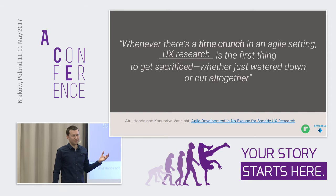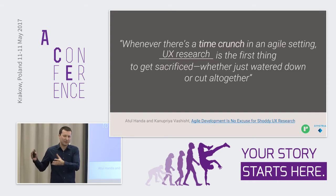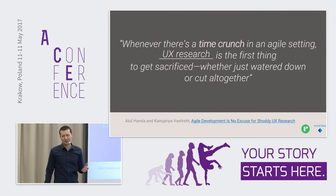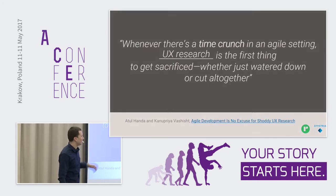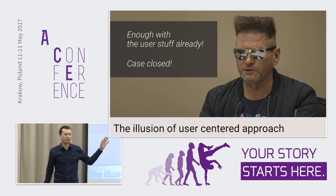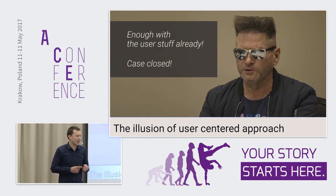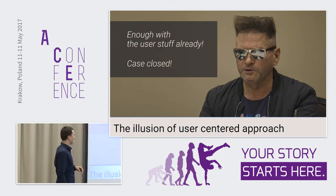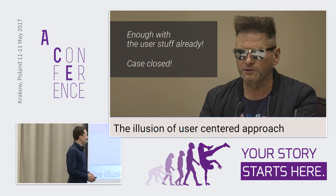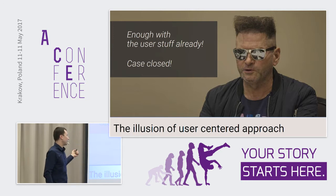There are different reasons for this. Sometimes it's a person or a group of people who say, 'We already know this much, we know everything up front.' They are certain we have every piece of information and we don't have to ask anyone. The case is closed — we have user stories, we have user acceptance testing, enough of the user stuff. But that's an illusion of a user-centered approach, because actually we usually don't know that much.